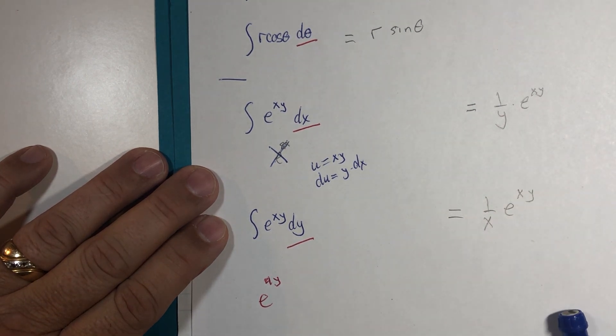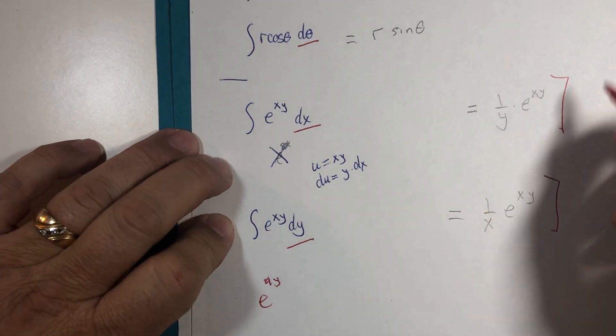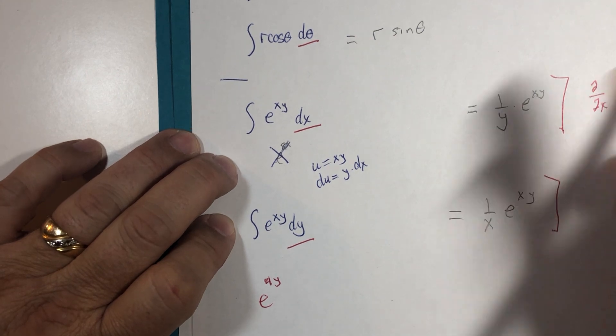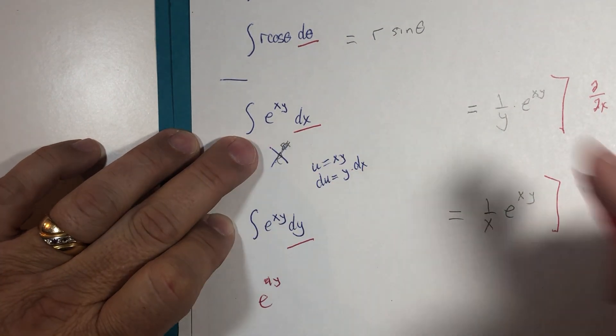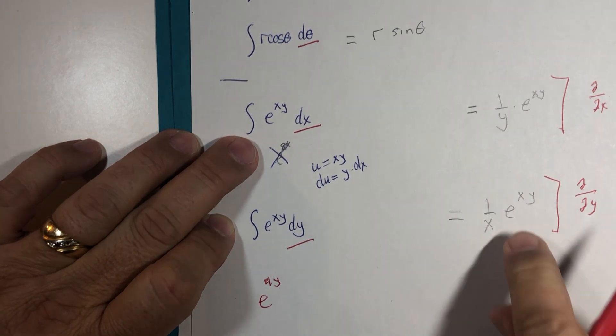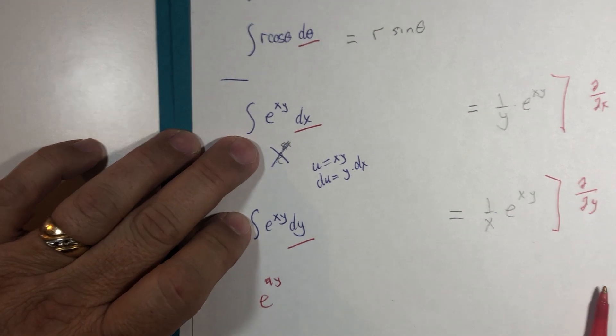And if you would like to verify these, this one take the partial with respect to x and you should end up with this expression again. And this one take the partial with respect to y and this would turn into that expression again. Give it a go on your own time. Catch you later.